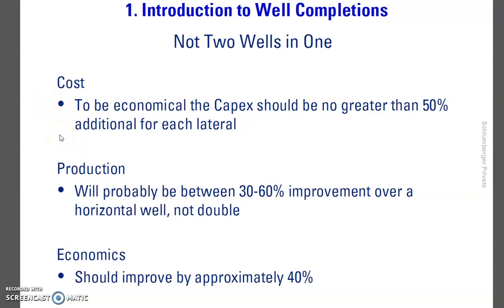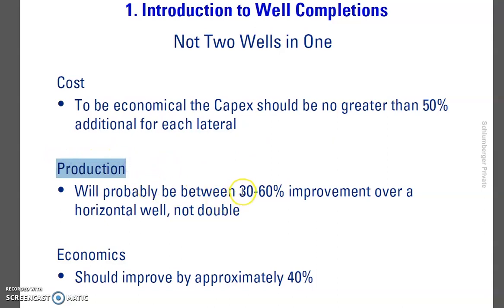We have three criteria when drilling any well — not only multilateral wells: cost, production, and economics. For multilateral wells specifically: the cost to be commercial should be no greater than 50% additional for each lateral; production improvement will probably be between 30 to 60% over a horizontal well; and economics should be improved by approximately 40%.